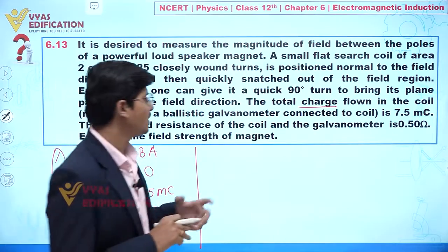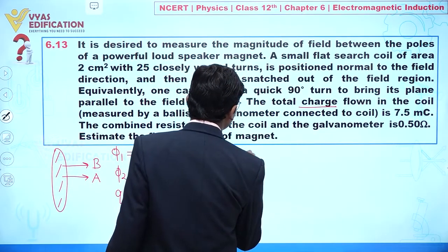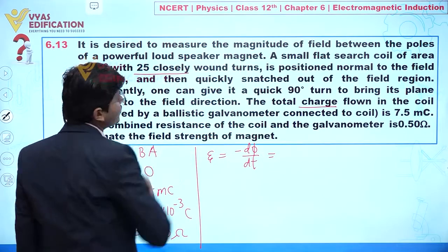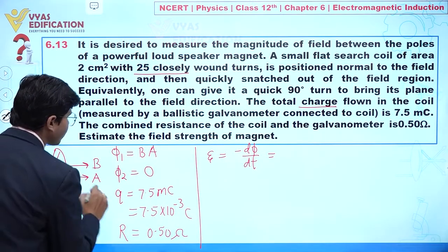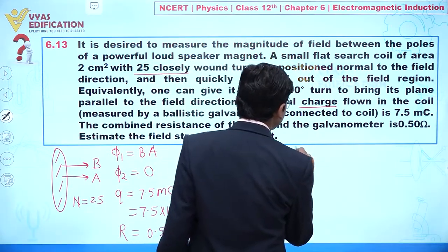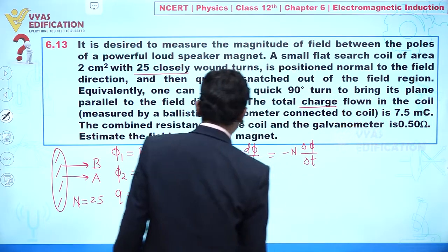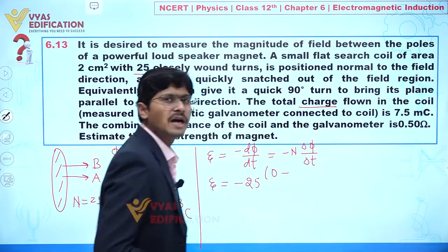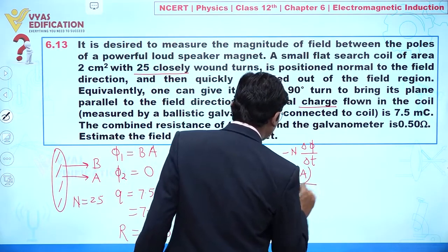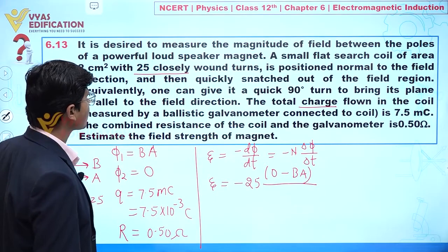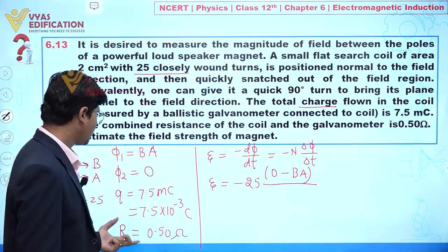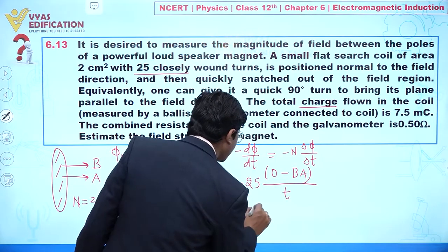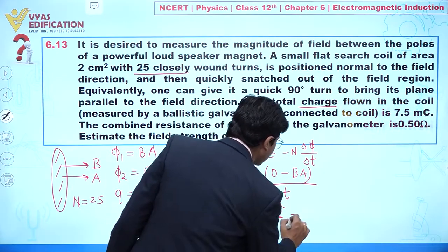The induced EMF is given by minus dΦ/dt. Since we have 25 turns, we write it as minus N × ΔΦ/Δt. The change in flux is: final flux is 0 and initial flux is BA, divided by Δt. Assuming total time is t, the value of EMF becomes 25BA divided by t.